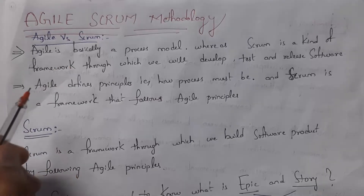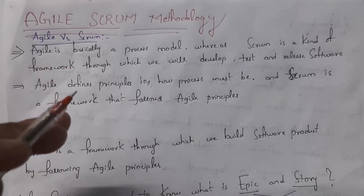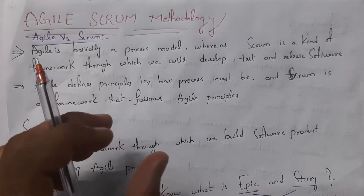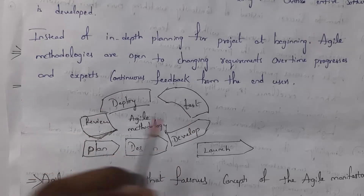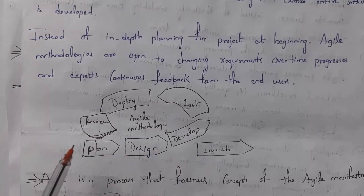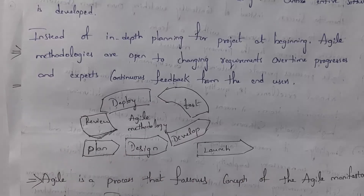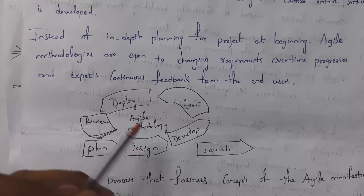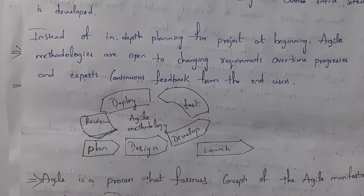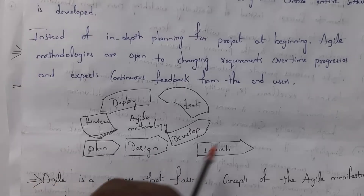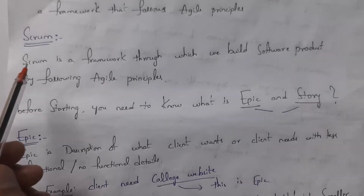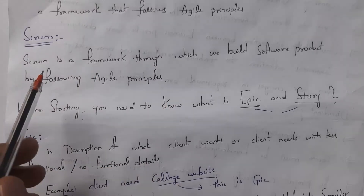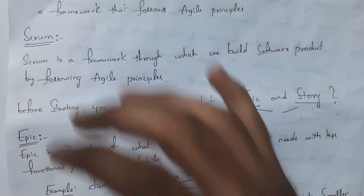Agile contains principles that define how the process must be, whereas Scrum is a framework that follows those Agile principles. Agile process tells you the steps to develop software, but how to plan, design, develop, test, and what tools and techniques to use — all that guidance is provided by the Scrum framework. So Scrum is a framework through which we build software products by following Agile principles.